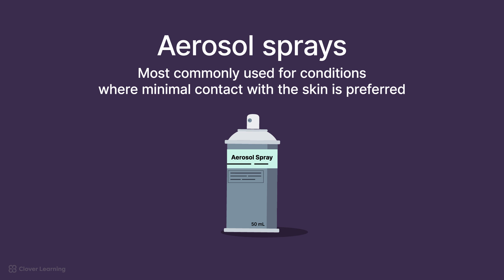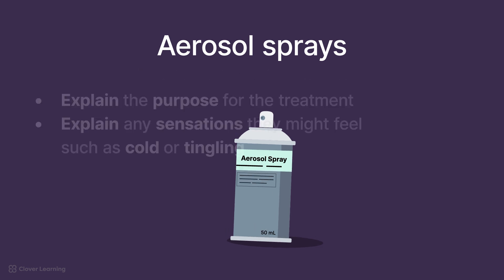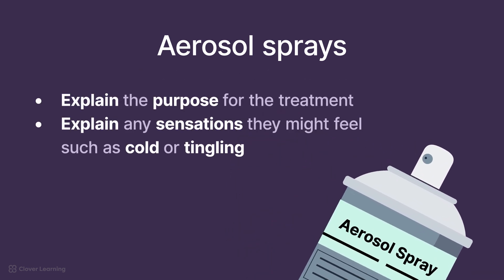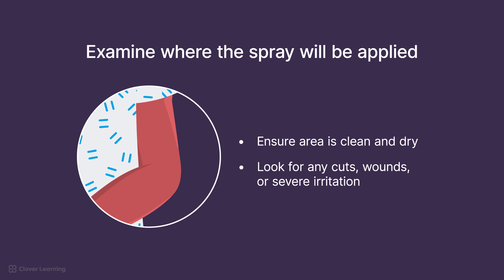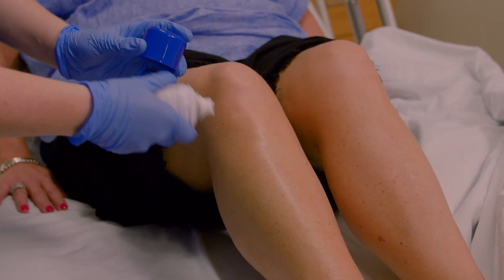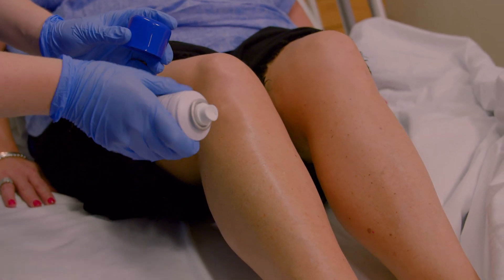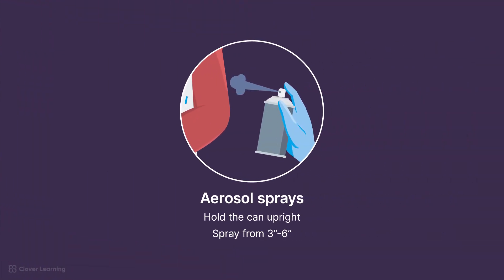Aerosol sprays are commonly used for conditions where minimal contact with the skin is preferred, such as painful skin disorders or hard-to-reach areas. Explain the procedure to the patient, including what the spray is for and what sensations, like cold or tingling, they might feel during application. Examine the area where the spray will be applied — ensure it is clean and dry, and look for any cuts, wounds, or severe irritation. Avoid using the spray on broken or severely damaged skin unless specifically indicated. Shake the aerosol canister vigorously for about 5 seconds before use to ensure the medication is properly mixed. Hold the canister upright, about 3 to 6 inches away from the skin. Distance may vary slightly depending on the product, so check the instructions.